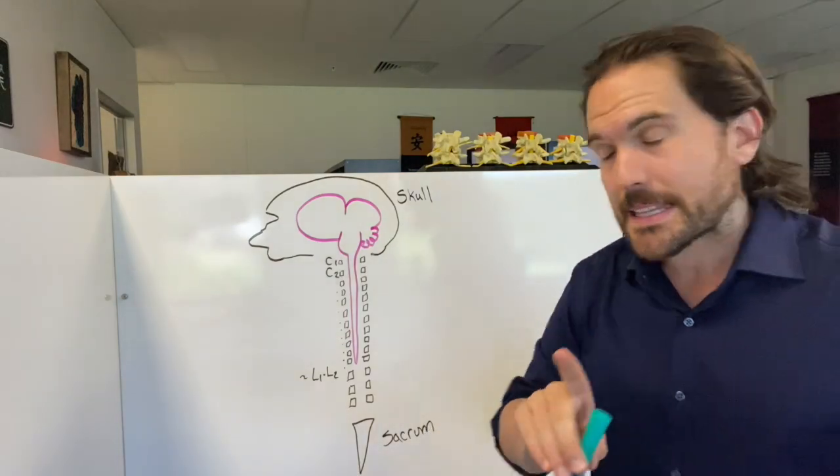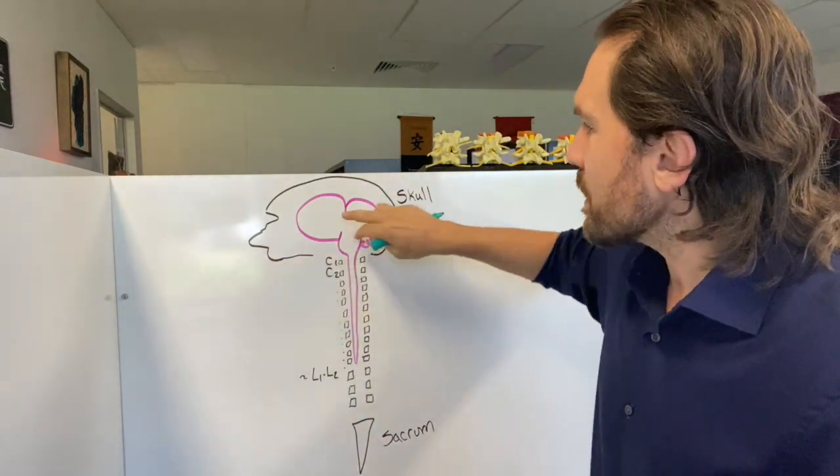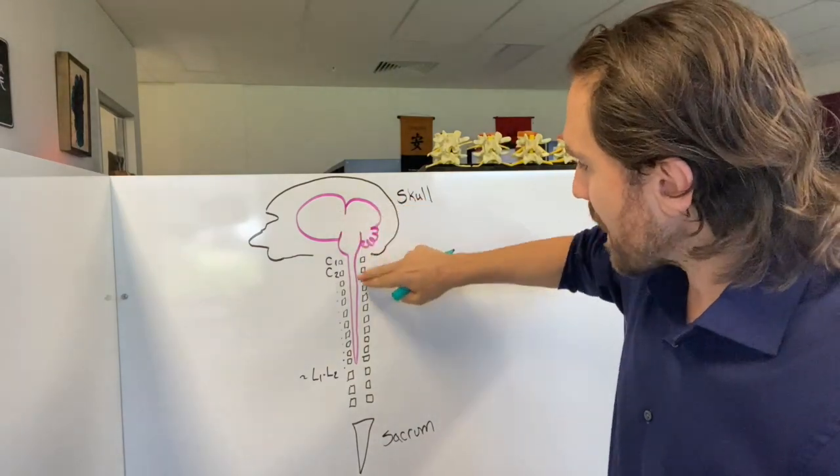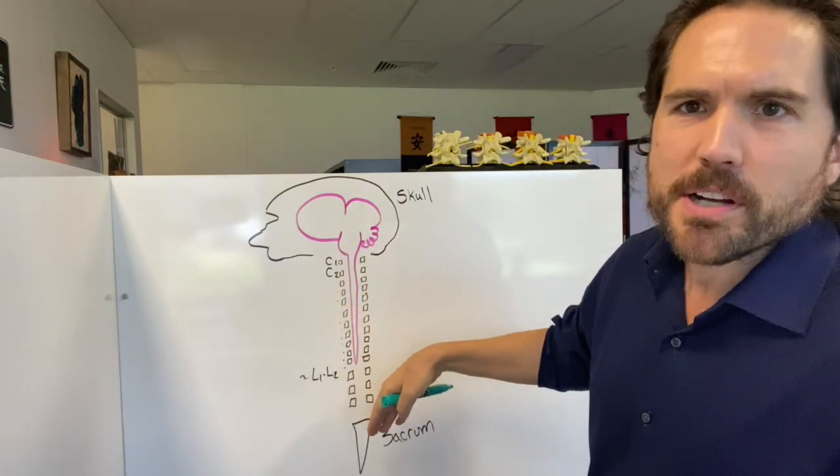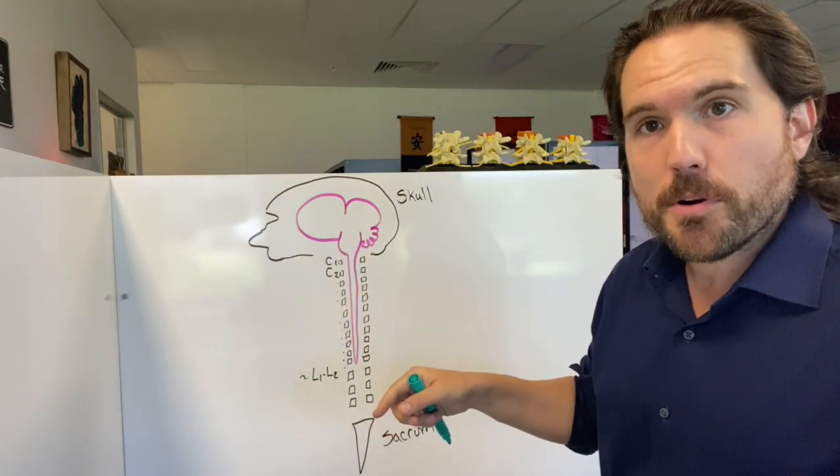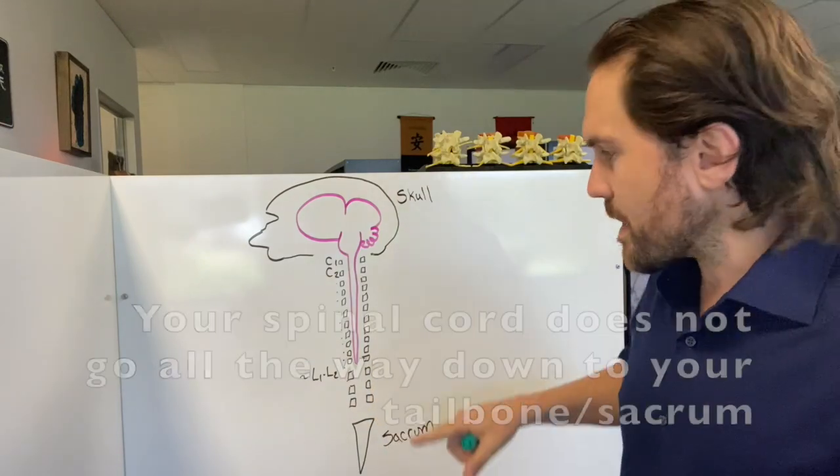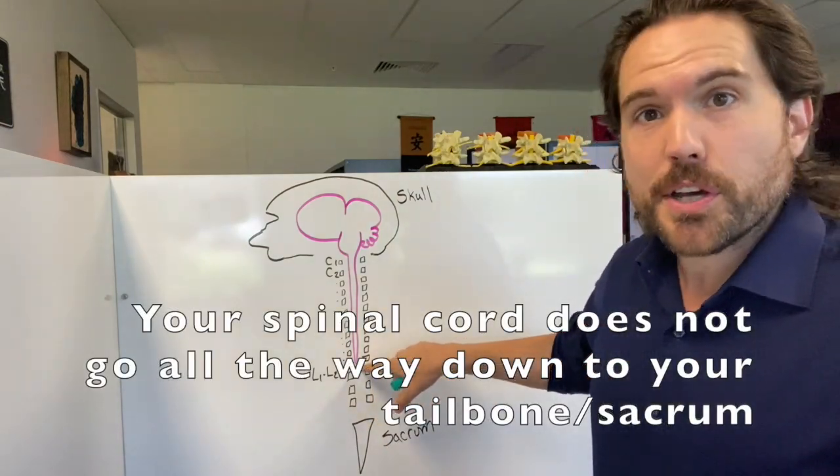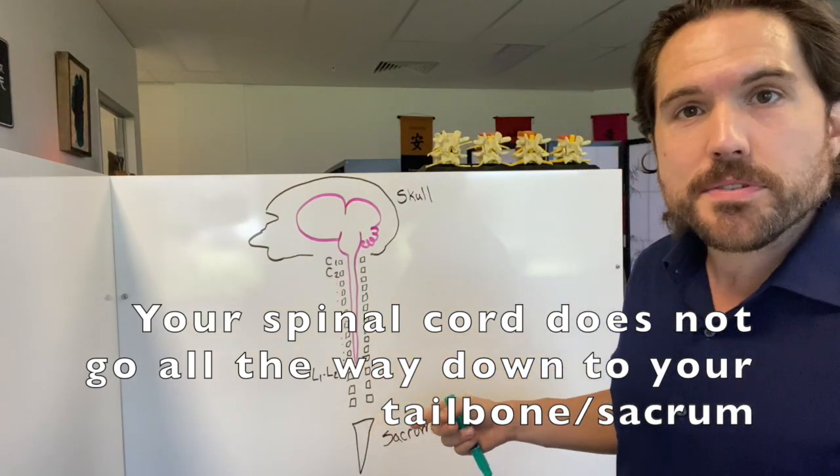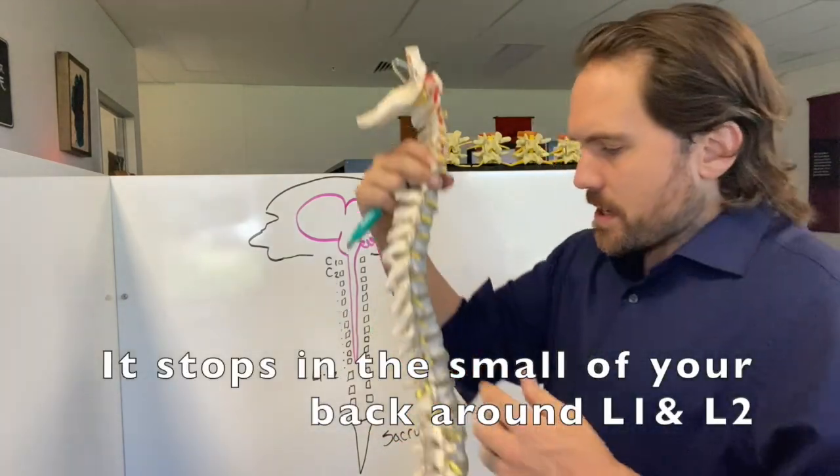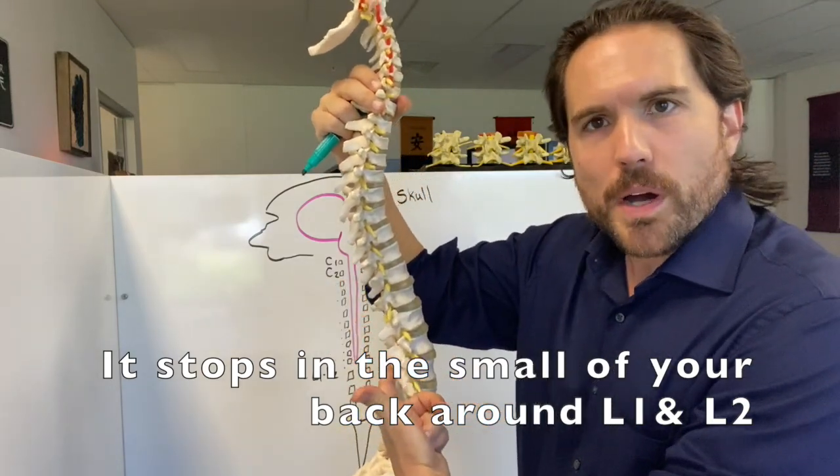They're actually constructed like this. So this is a very poor illustration of somebody from the side with their brain, with their brain tail, that is their spinal cord. And then I've done not to scale, but a bunch of little illustrations for all of the vertebrae where they would be. So what I want to point out for you, number one, is that your spinal cord does not actually go all the way down to your tailbone, aka your sacrum. It stops kind of in the small of your back, right about there at around the level of L1 and L2.